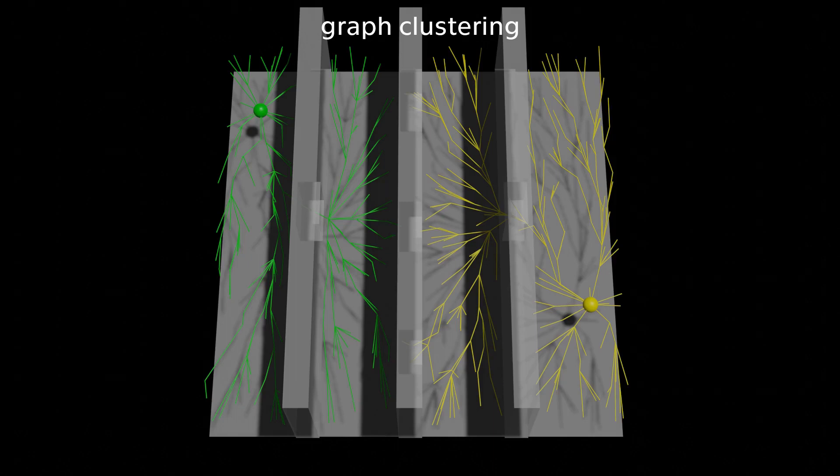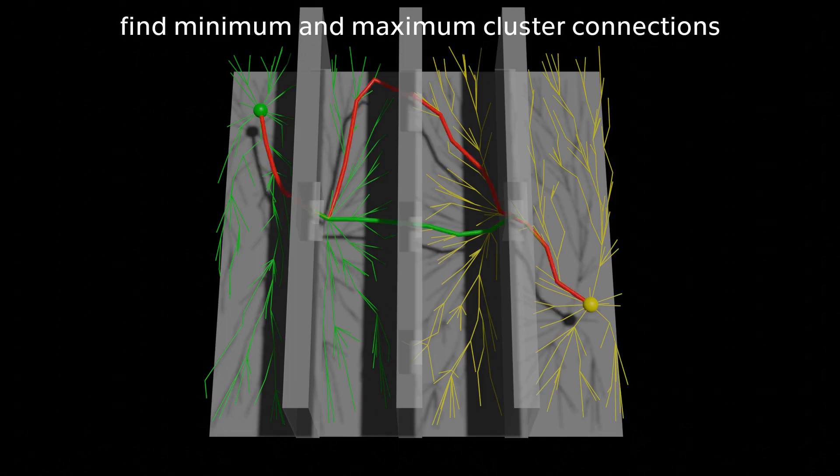Edges between neighboring nodes belonging to different clusters are then examined to select the shortest and longest path connecting two neighboring clusters. We name the shortest, which is marked green, minimum cluster connection. The longest, marked red, is called maximum cluster connection.